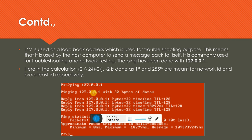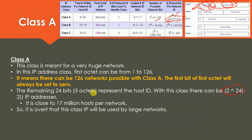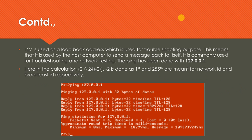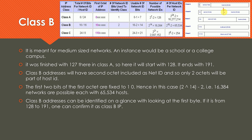The address 127.0.0.1 is the loopback address, used for testing connectivity and troubleshooting — pinging it sends packets to the Ethernet card itself to verify it's functional. Class B uses the first two bytes for network ID and the last two bytes for host ID: 14 bits for net ID and 16 bits for host ID, yielding 16,384 possible networks and 65,534 IP addresses per network.